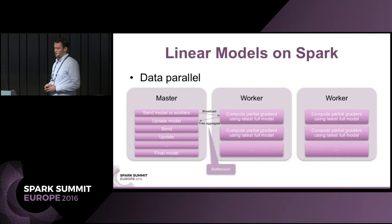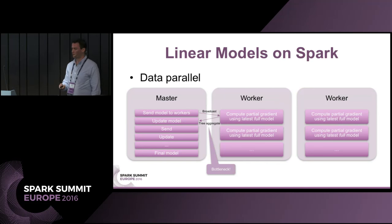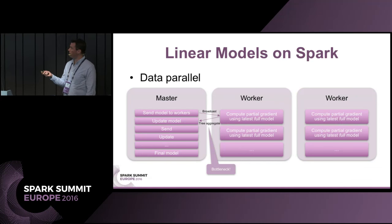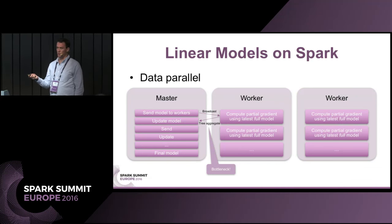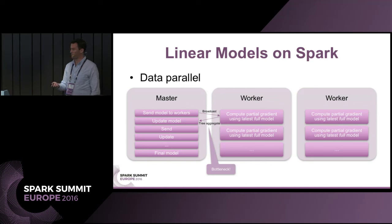The standard way of training models on Spark is data parallel. The master node broadcasts the initial model to all workers, each worker computes a partial gradient based on the current full model, and then the master receives the gradients back through a tree aggregation and collect operation. This is a bottleneck because the master is involved in every iteration and the entire model must be broadcast and reduced back. While Spark has an efficient tree aggregation mechanism, the master remains the bottleneck.